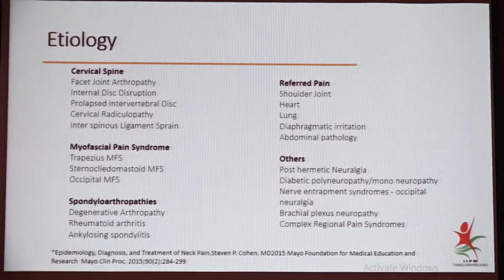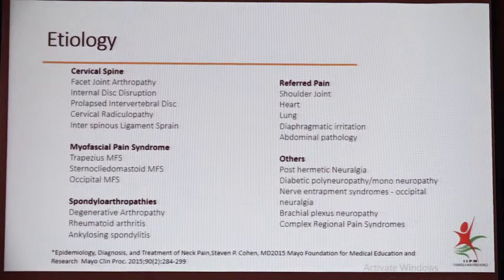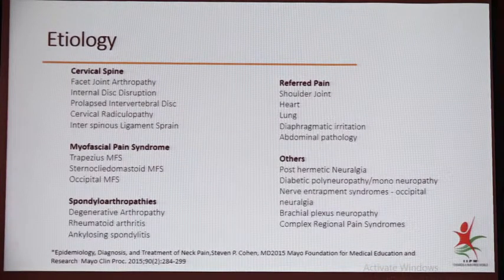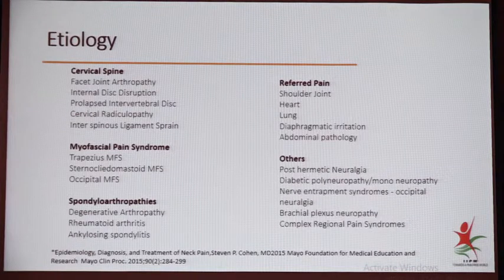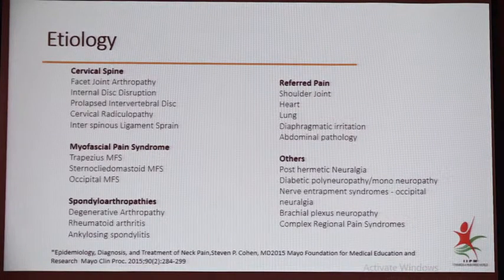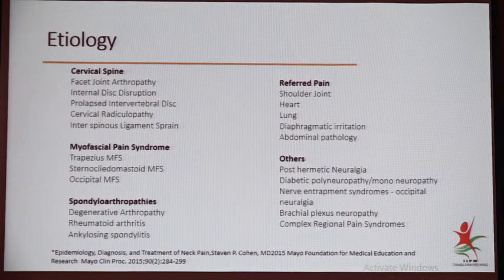What are the causes of neck pain by etiology? Facet joints account for 15 to 30% of causes. Internal disc disruption commonly affects the middle age or working age group, and its severe form will cause prolapsed disc, leading to cervical radicular pain or cervical radiculopathy. Interspinous ligaments may be involved in strain or trauma cases. Myofascial syndrome contributes around 15 to 20% of cases — the most common being trapezius myofascial syndrome. Spondyloarthropathies, referred pain from the shoulder, heart, lung, and diaphragm should not be forgotten. Others include post-herpetic neuralgia, diabetic neuropathy — very common in India — nerve entrapment syndromes, occipital neuralgia, carpal tunnel syndrome, brachial plexus neuropathy, and CRPS.